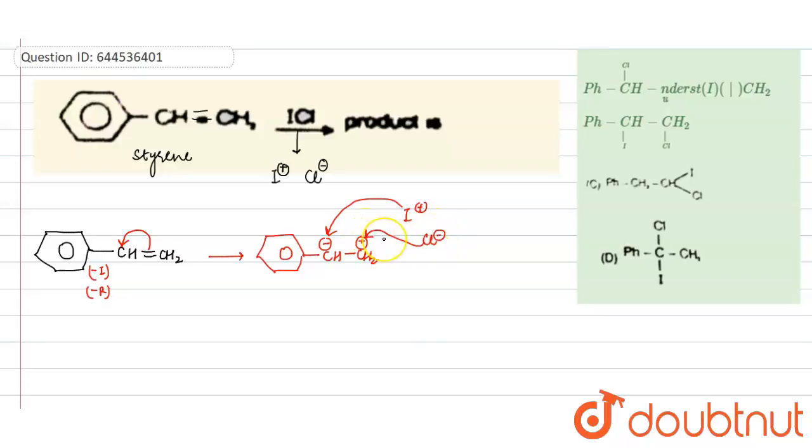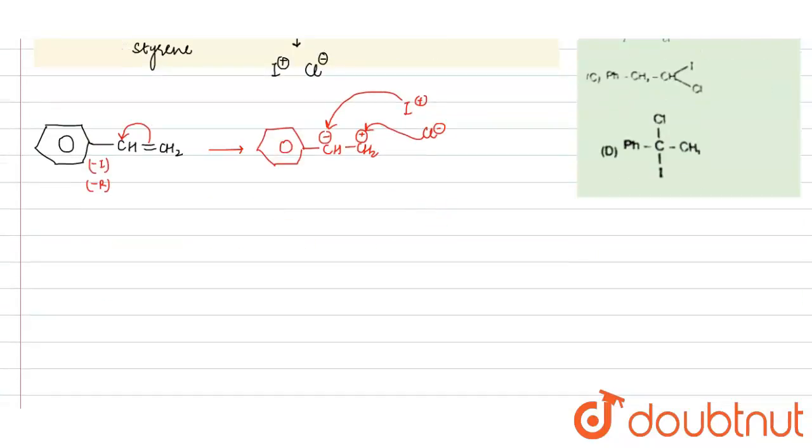that is on carbocation. So our product will be this: here CH, here CH, here I, and CH2 here Cl. This will be your final product. Now check out the option which one is correct.